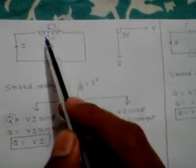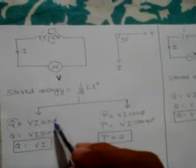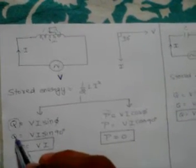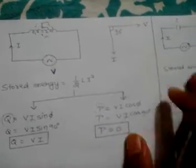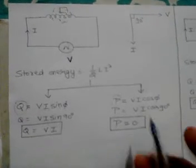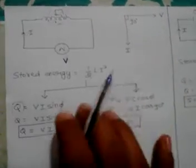The power in the inductor is divided into two parts: reactive power and active power. Since the angle phi is 90 degrees, the reactive power Q equals V times I (from VI sine phi), and the active power becomes zero because cos 90 is zero. From this we can conclude that an inductor never absorbs or delivers active power — it will only absorb or deliver reactive power, if it is a pure inductor.